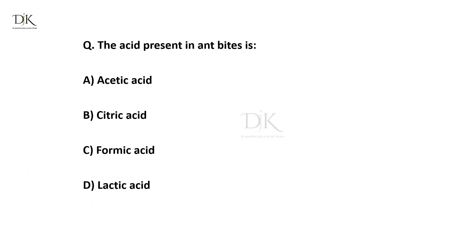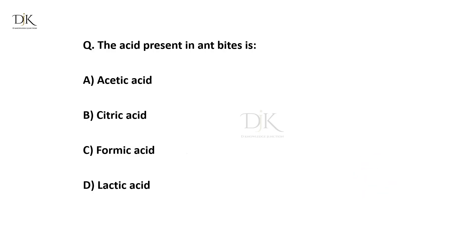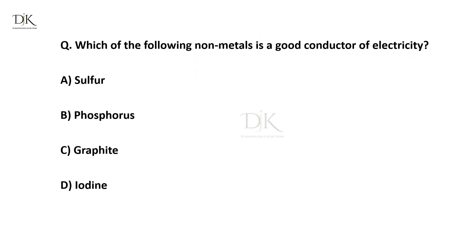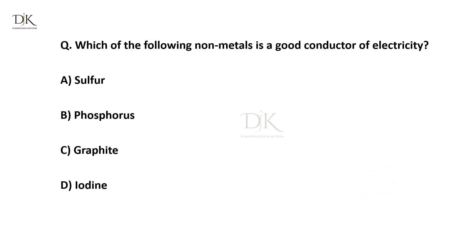The acid present in ant bites is? The right answer is formic acid. Which of the following non-metals is a good conductor of electricity? The right answer is graphite.